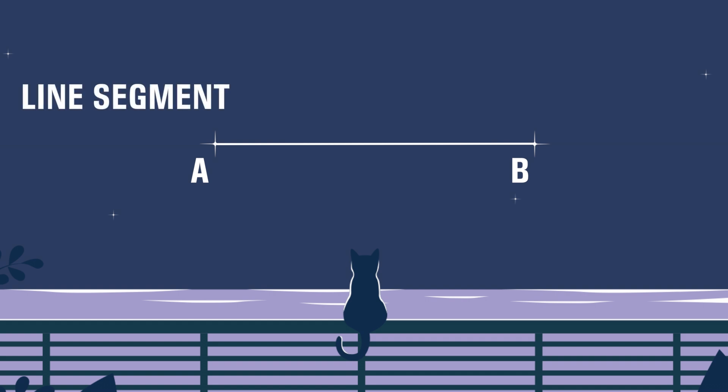A line segment is part of a line with two endpoints. We have line segment AB and line segment BA.